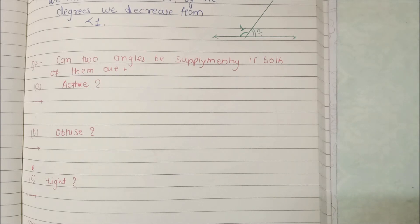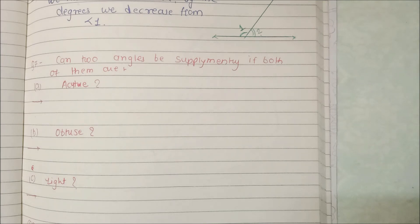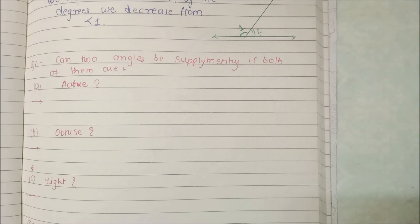Acute angle means the angle which is less than 90 degrees. Even if it is 89 degrees — one degree less than 90 — it is still an acute angle. Exactly 90 degrees is a right angle, and angles greater than 90 degrees are obtuse.